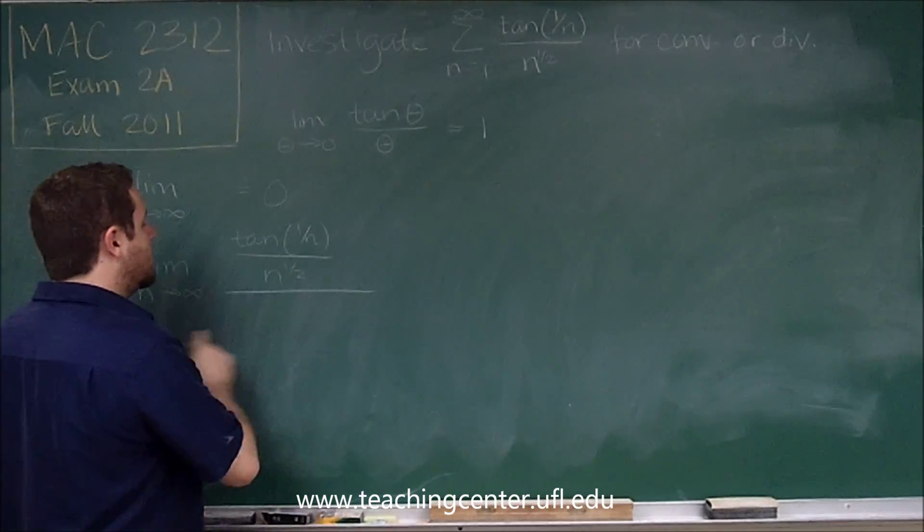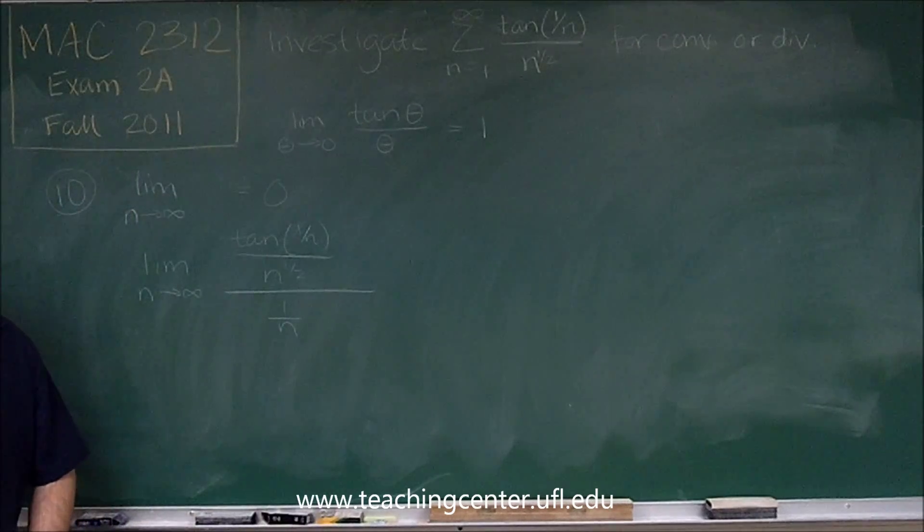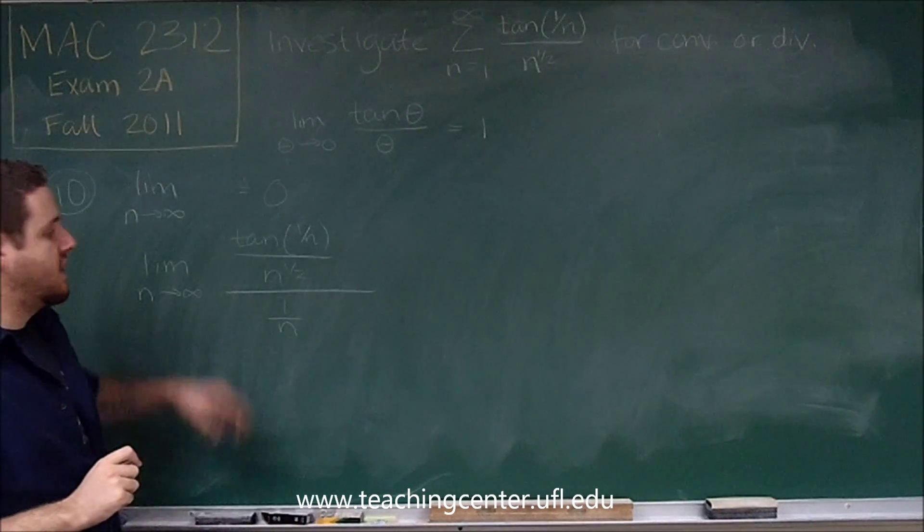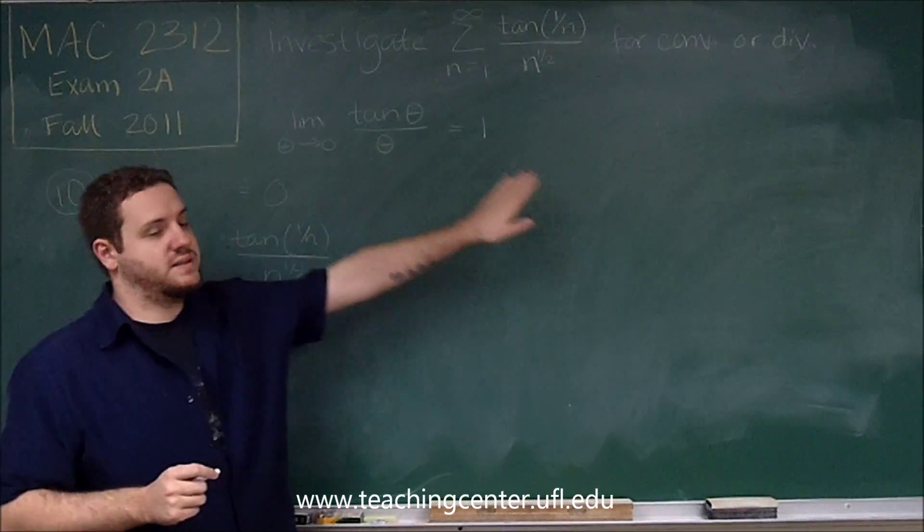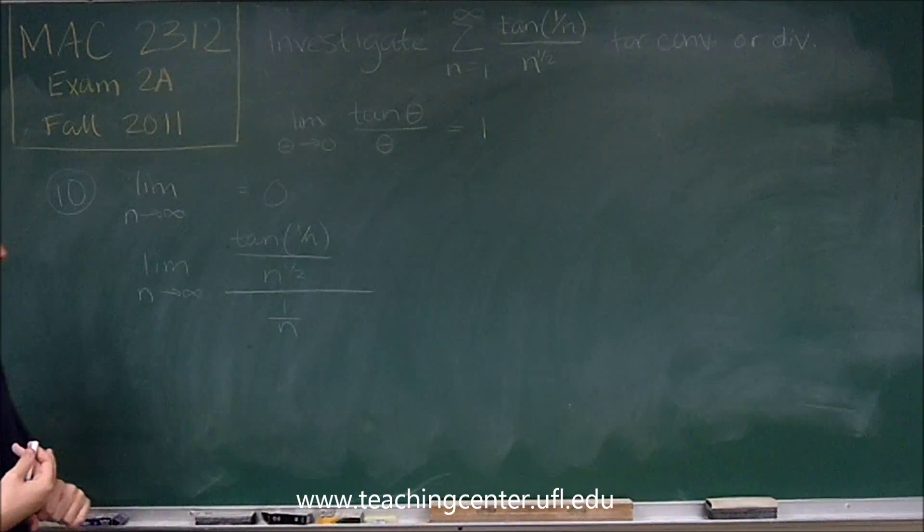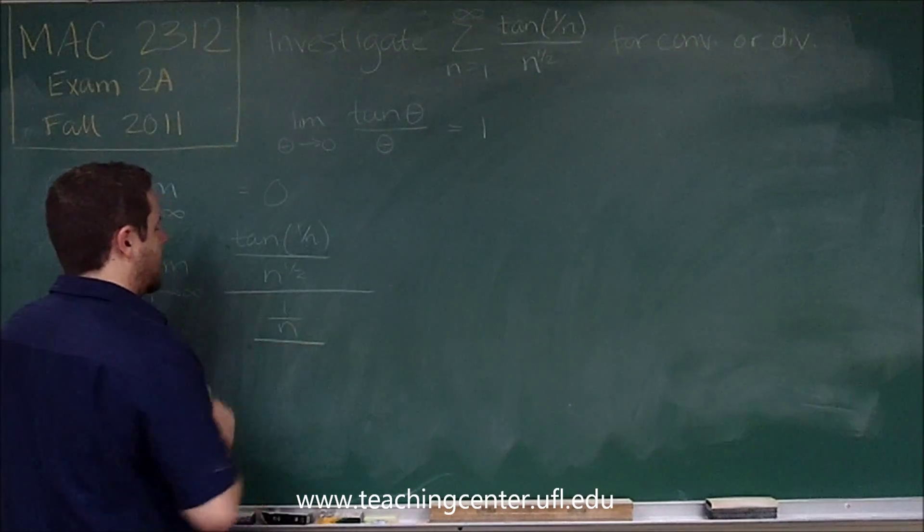So we want the numerator of what we have down here to be 1 over n. Because that will create the fraction tan 1 over n over 1 over n, which by this identity is just going to be 1.